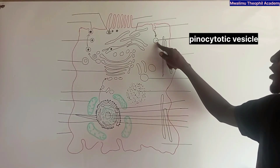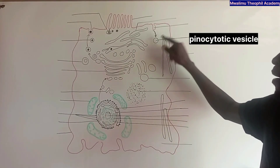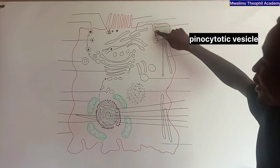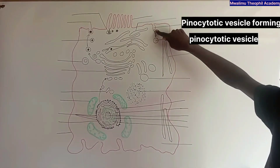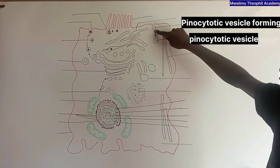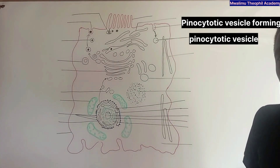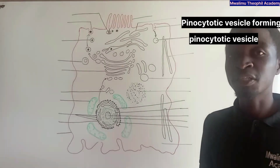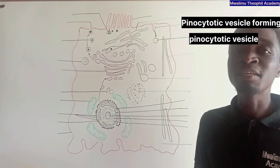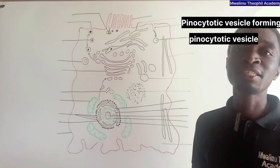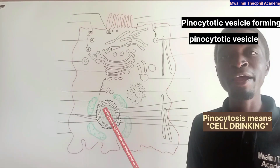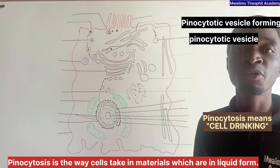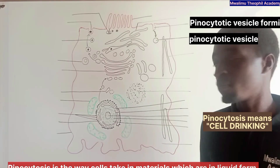This is a pinocytotic vesicle, which is formed by pinocytosis. Pinocytosis is simply known as cell drinking — the process by which cells take in materials which are in liquid form.